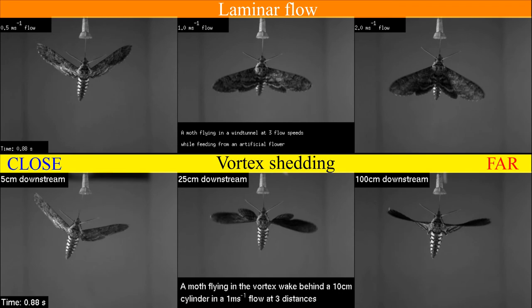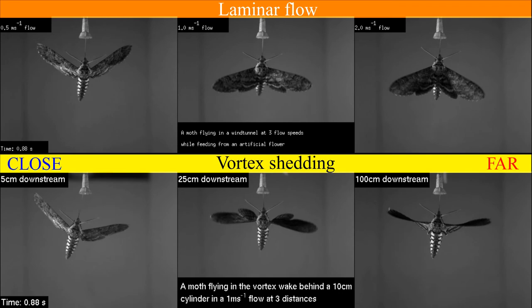In conclusion, we demonstrated experimentally that aerial disruptions experienced by Manduca sexta flying into von Karman vortices are vortex size and frequency dependent, and these disruptions are reduced dramatically with downstream distance and vortex size.